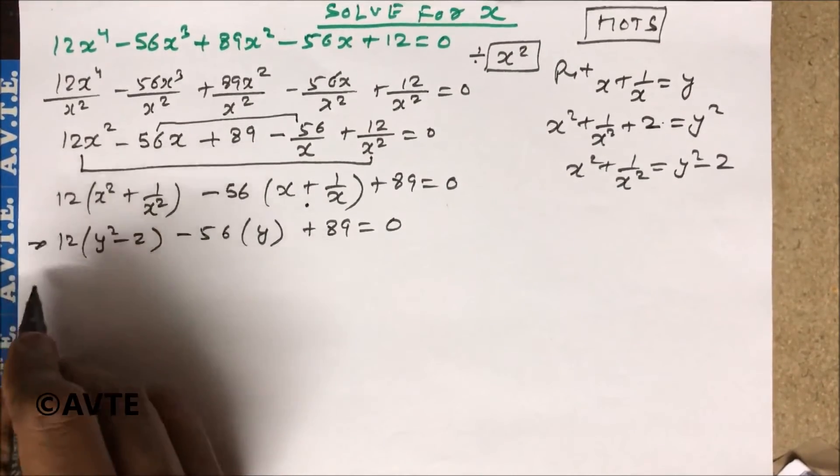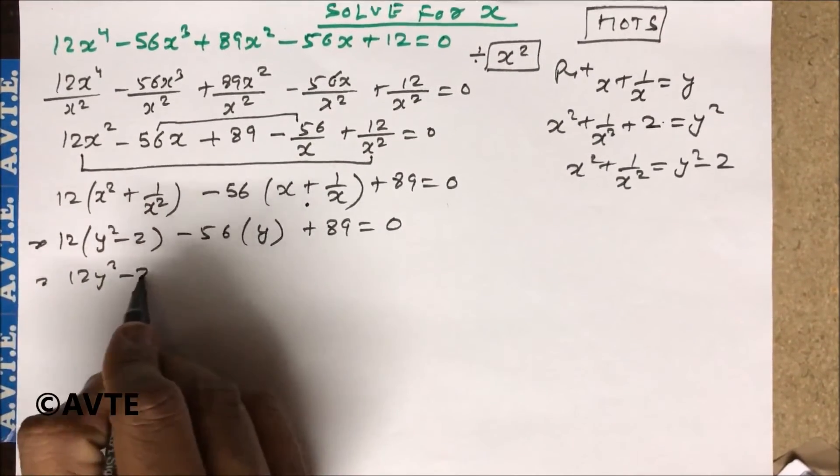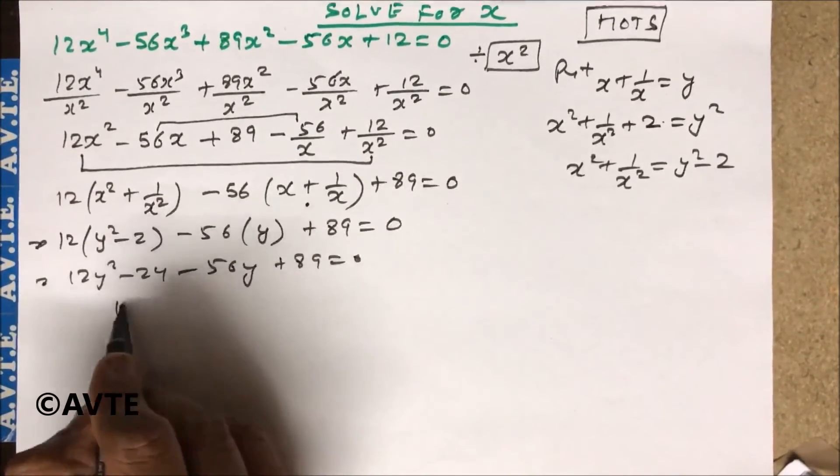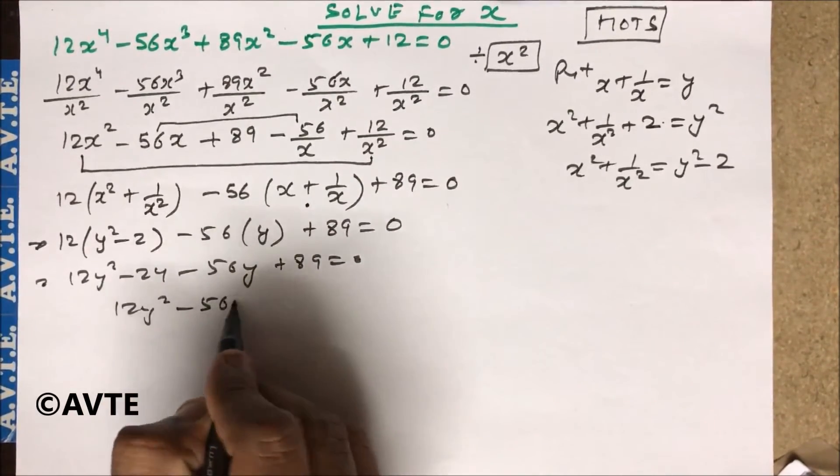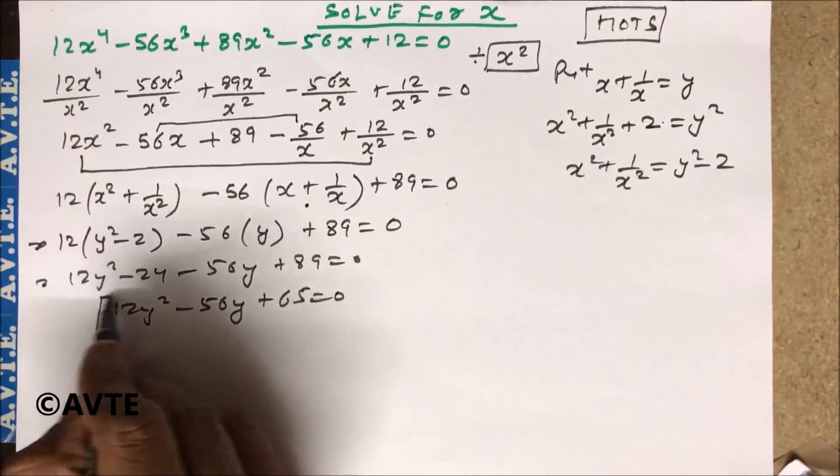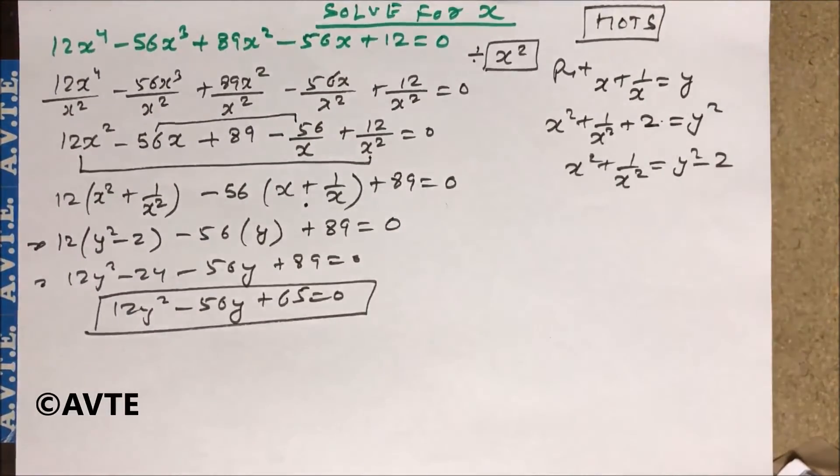So this is your 12y² - 24 - 56y + 89. So you have quadratic equation 12y² - 56y + 65. This is your quadratic and you can solve this quadratic by either formula method or you can do by middle term or by completing the square method.